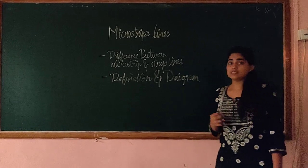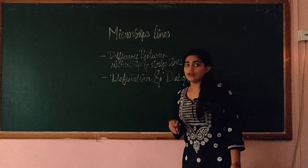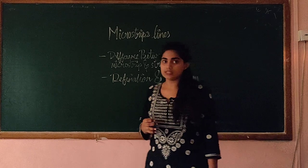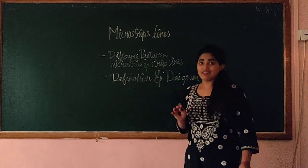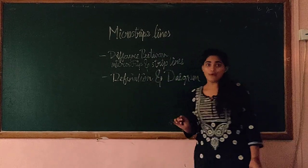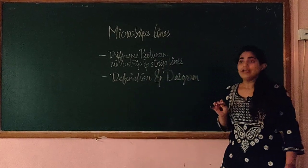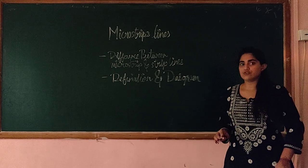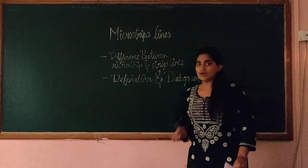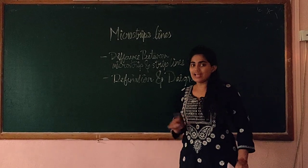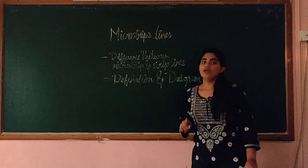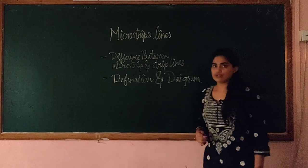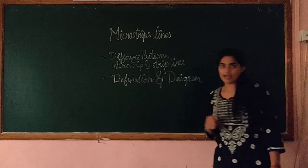Basically, what is the difference between a micro strip line and a strip line? I will just elaborate it in one point. In a micro strip line, only one substrate is present but not at the top, and vice versa for strip lines.